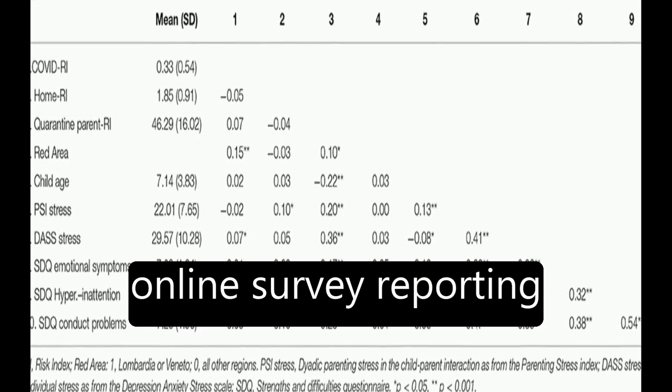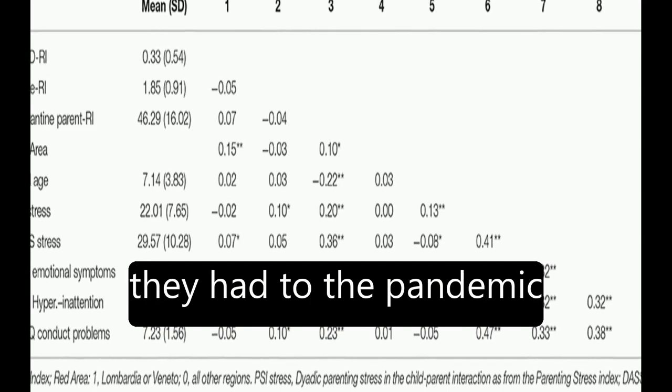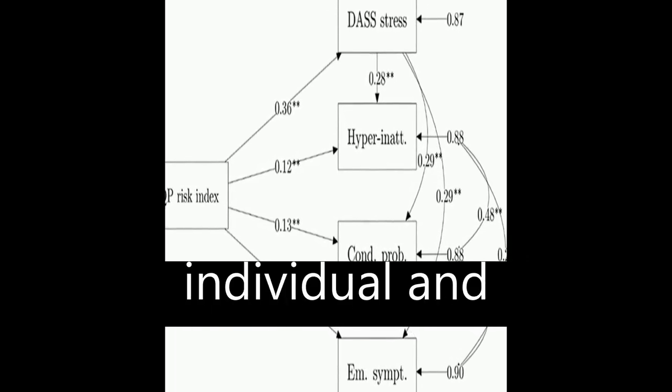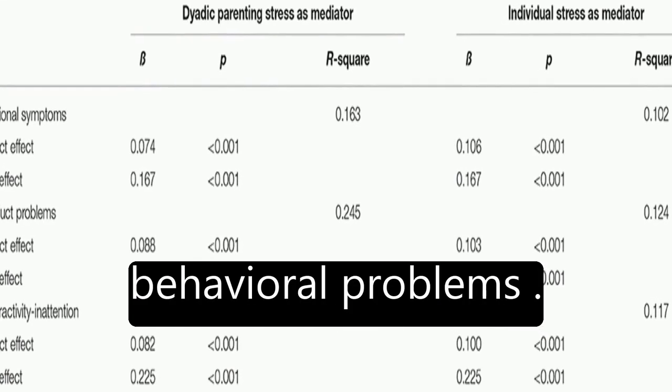Parents of children aged between 2 and 14 years old completed an online survey reporting their home environment conditions, any relation they had to the pandemic consequences, their difficulties experienced due to the quarantine, their perception of individual and parent-child dyadic stress, and their children's emotional and behavioral problems.